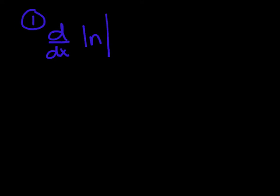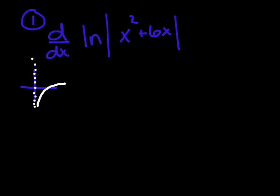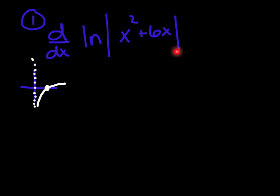Let's take example 1. I'll take the derivative of the ln of the absolute value of x squared plus 6x. Let's quickly talk about that absolute value — it's not there to scare you. It's there to remind you that if you look at the ln graph, we had a vertical asymptote at x equals 0. Remember, the x values for ln must always be positive, so this absolute value reminds you that whatever you take the ln of must be a positive number.